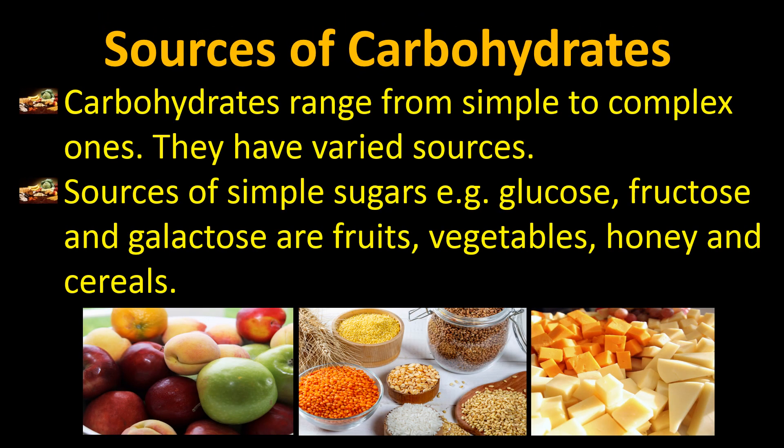Carbohydrates range from simple to complex ones and they have varied sources. Sources of simple sugars — for example, glucose, fructose, and galactose — are found in fruits, vegetables, honey, and cereals. Now we know that glucose is a very simple form of sugar, found in bread.